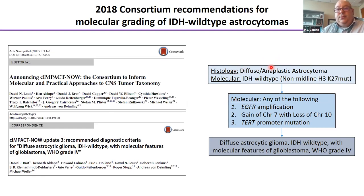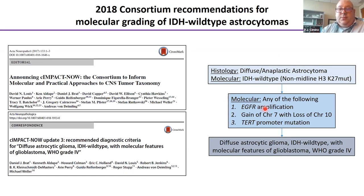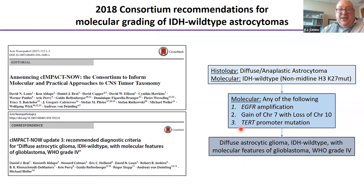The algorithm: if a tumor is histologically a diffuse or anaplastic astrocytoma (grade 2 or 3), doesn't meet traditional histological definitions of glioblastoma, is IDH wild type and not midline H3 histone mutant, and has any one of EGFR amplification, co-gain of chromosome 7 with loss of 10, or TERT promoter mutation — these were termed 'diffuse astrocytic glioma, IDH wild type with molecular features of glioblastoma, WHO grade 4.' They wanted to convey that histologically these look lower grade but molecularly look high grade.